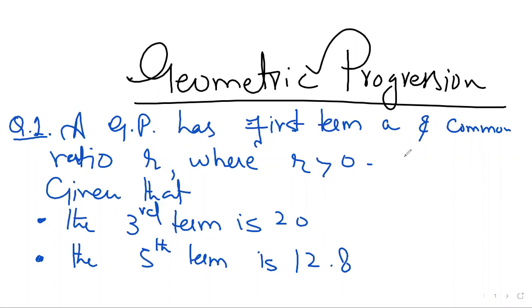The topic is geometric progression. The question is: a geometric progression has first term A and common ratio R, where R is positive because R is greater than zero.